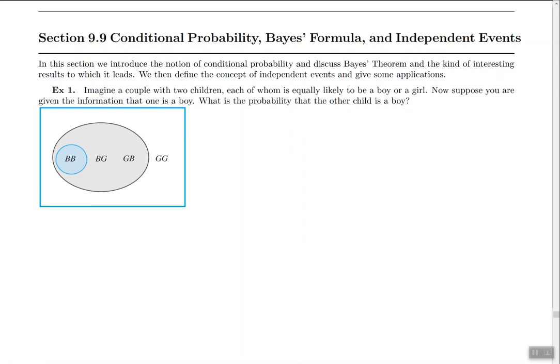In this section we will introduce the notion of conditional probability and discuss Bayes theorem and the kind of interesting results to which it leads. We'll also talk about the concept of independent events and give some applications.